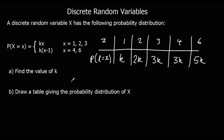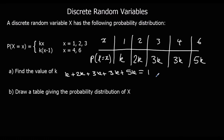So we're going to find the value of k. All of the probabilities have to add up to one whole: k plus 2k plus 3k plus 3k plus 5k equals 1. That gives us 14k equals 1, so k must be 1/14.